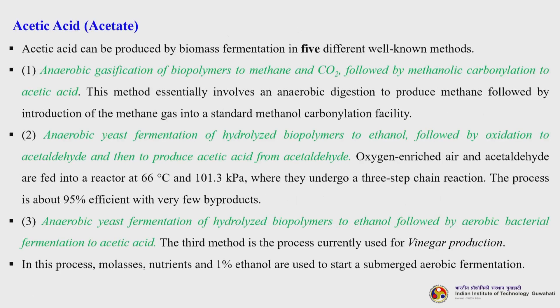Acetic acid can be produced by biomass fermentation in five different well-known methods. The first is anaerobic gasification of biopolymers to methane and carbon dioxide followed by methanolic carbonylation to acetic acid. This method essentially involves anaerobic digestion to produce methane, followed by introduction of the methane gas into a standard methanol carbonylation facility.